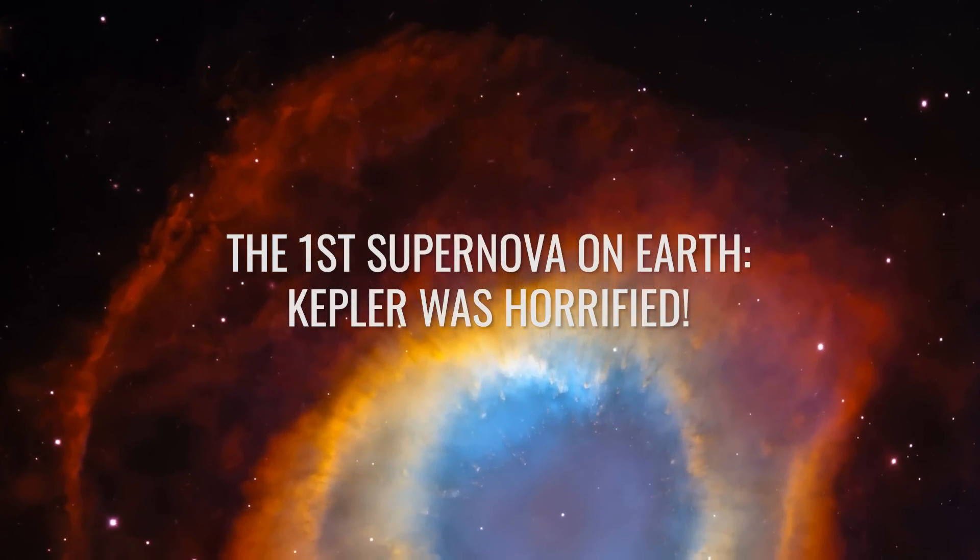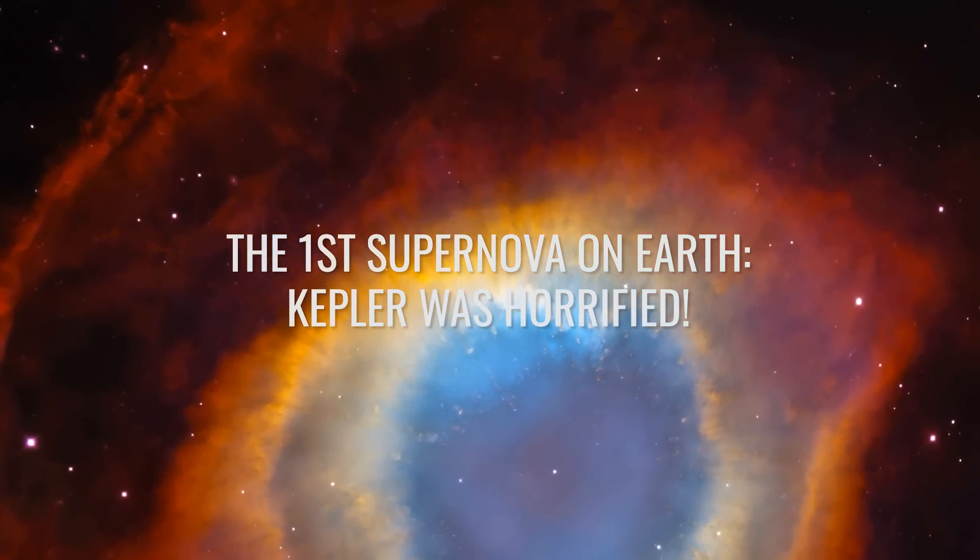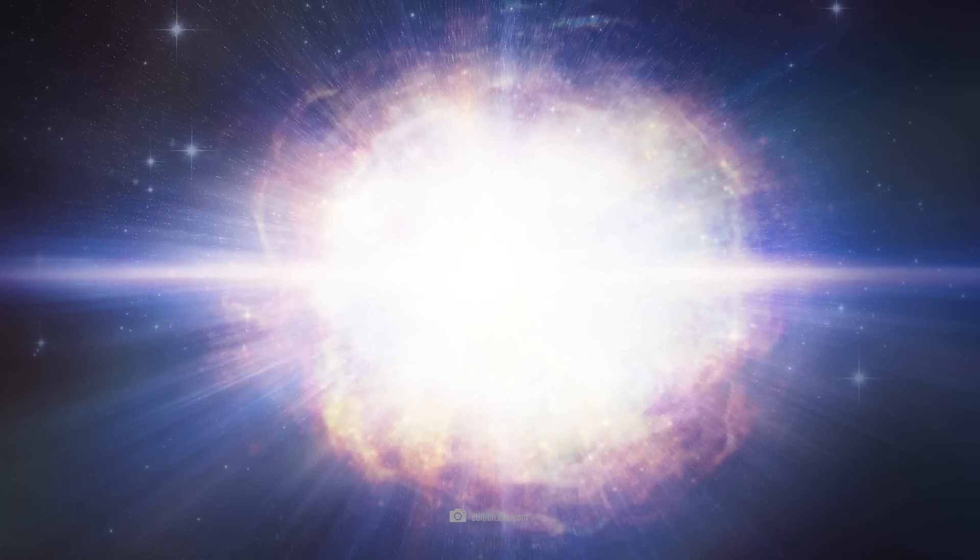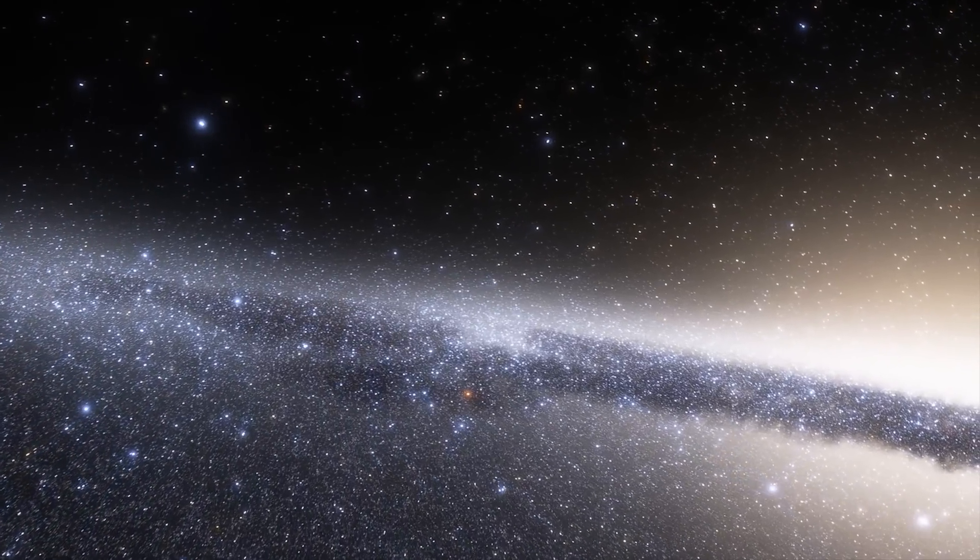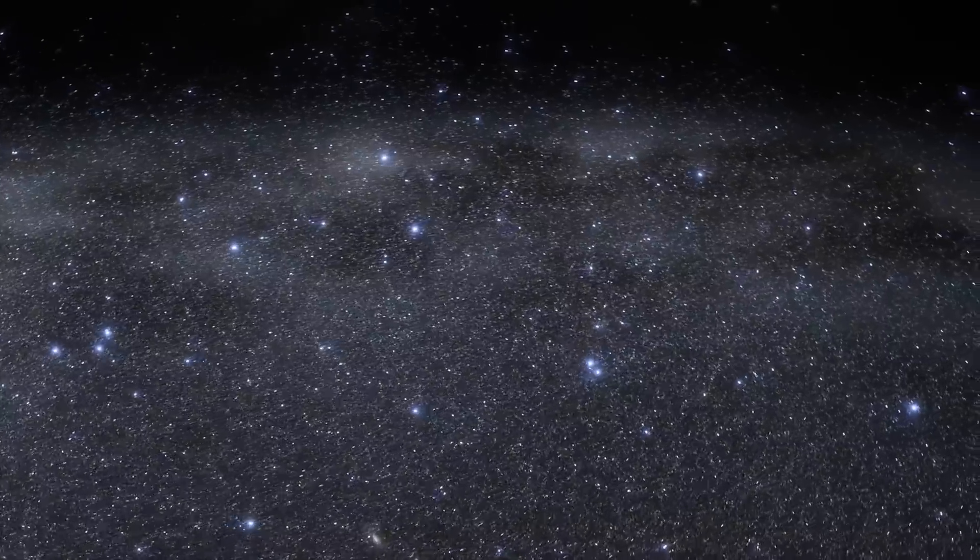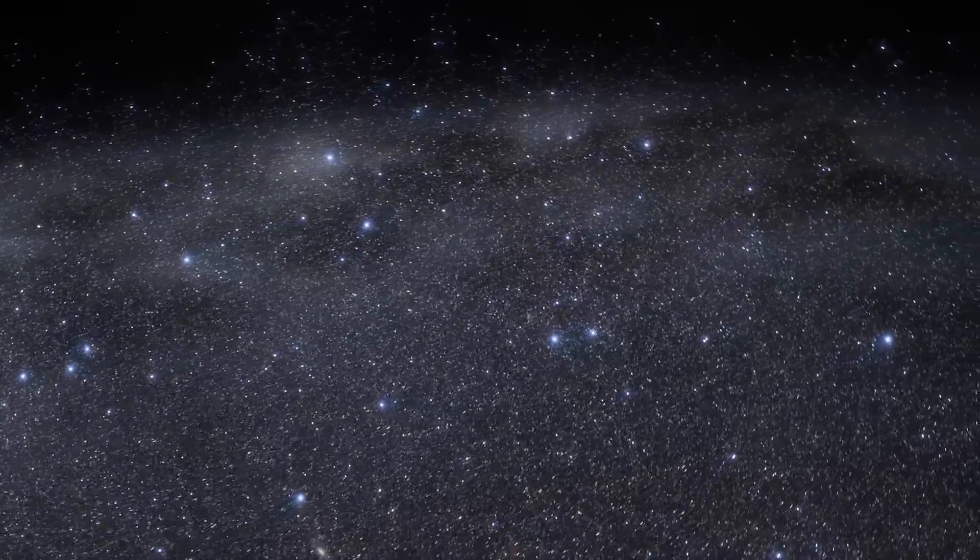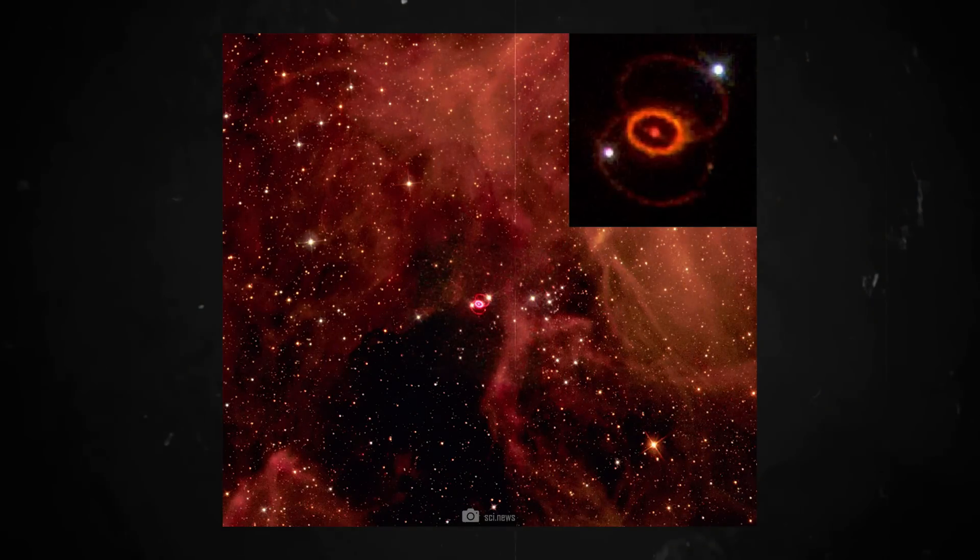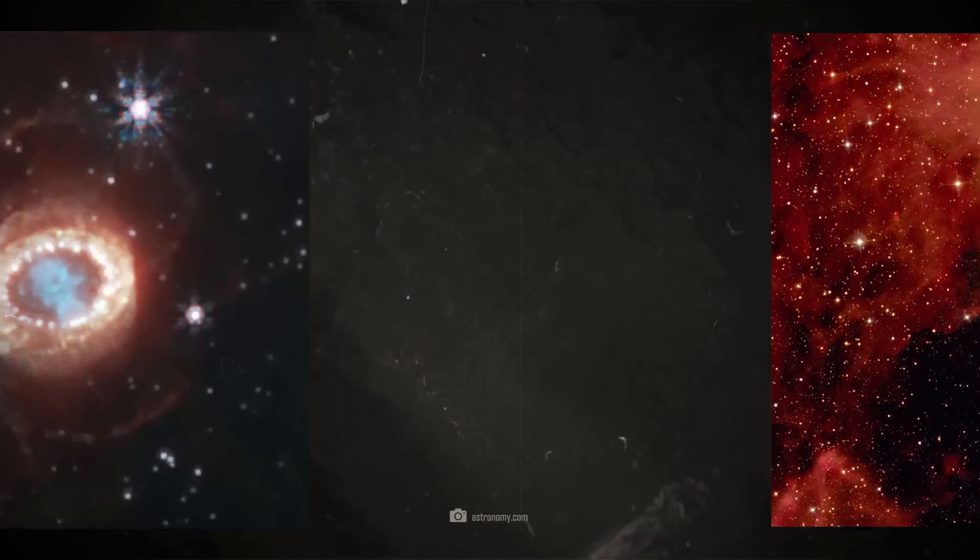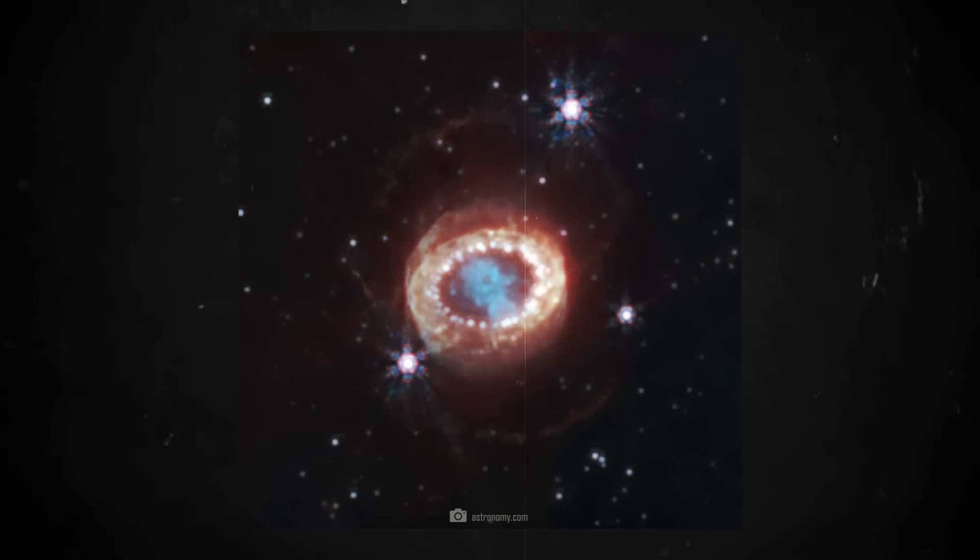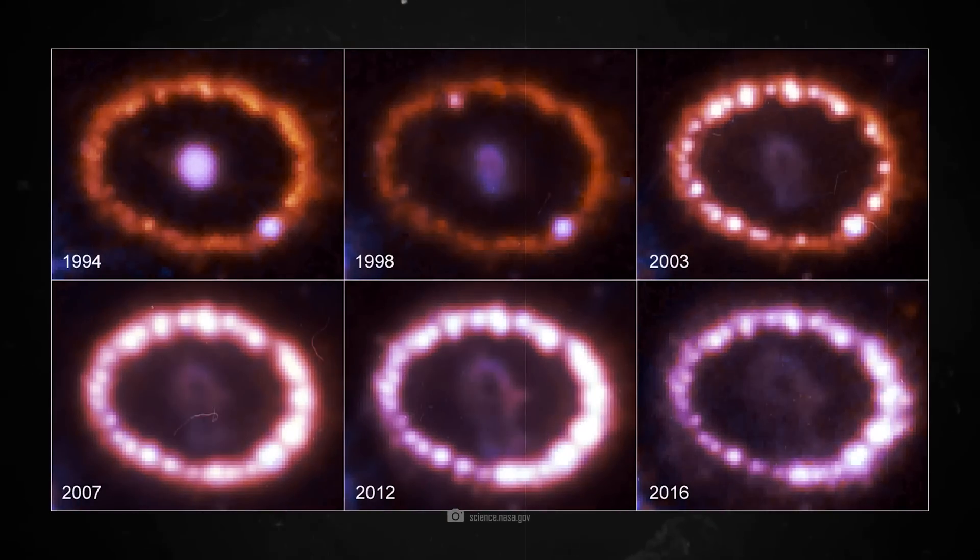The first supernova on Earth, Kepler was horrified. Supernovae are rare events and scientists have only recently become aware of this phenomenon. In our own galaxy, it's estimated that a star explodes every 50 years, but we do not see many supernovae. The last supernova visible and documented from Earth was Supernova 1987A in the Large Magellanic Cloud, a small neighboring galaxy of the Milky Way. This supernova was discovered on February 24th, 1987, and provided astronomers with a valuable opportunity to study in detail the physical processes and aftermath of a supernova explosion.